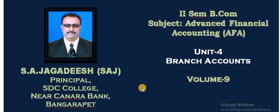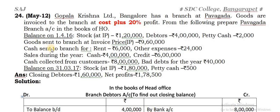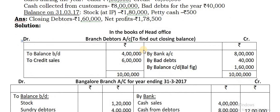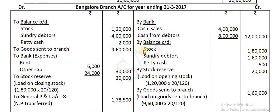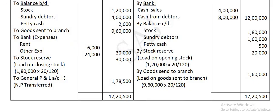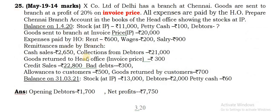Very good morning children. I am here at Suggester. Here we go with the 9th volume of the chapter Branch Accounts. In my last volume, I have given this as homework for you. Those who have not done, you can see the answer for that. You can pause it and copy it down. So the next question, question number 25.